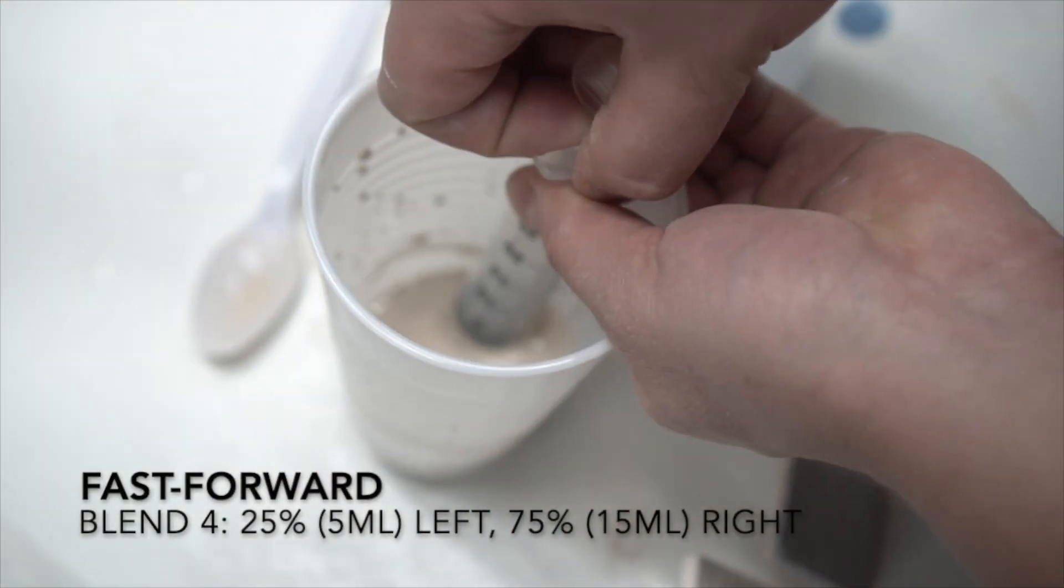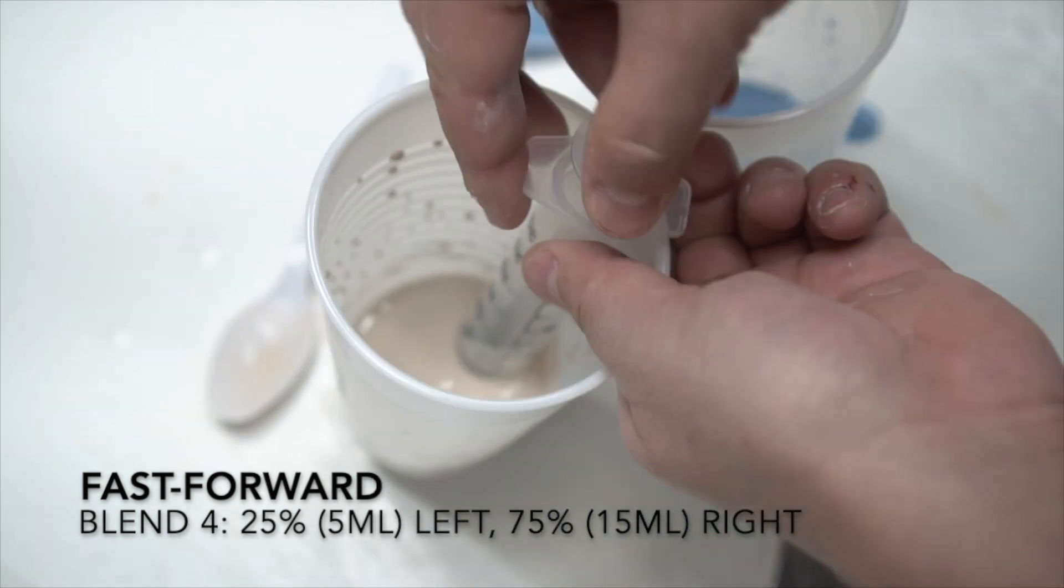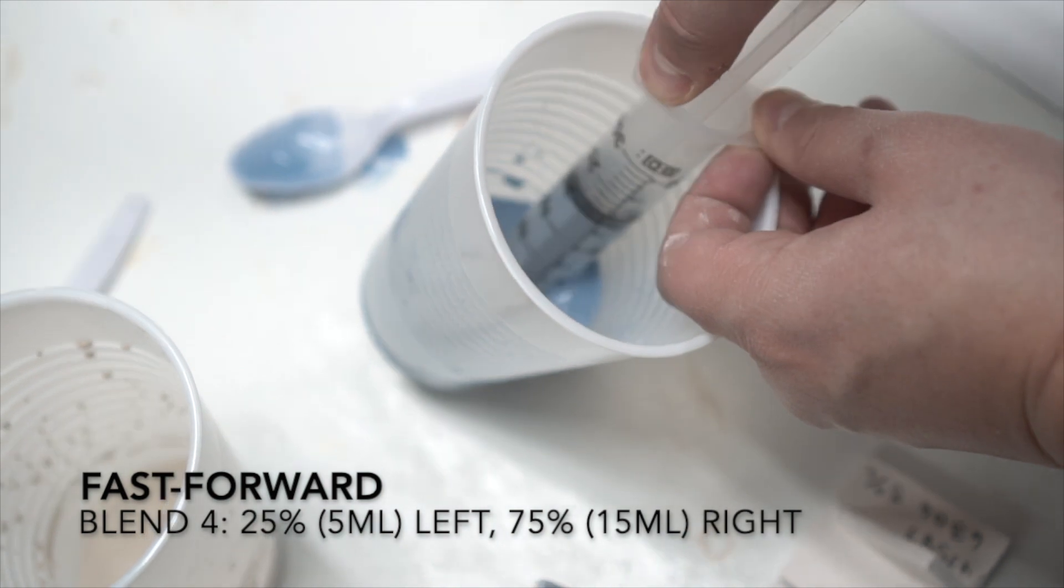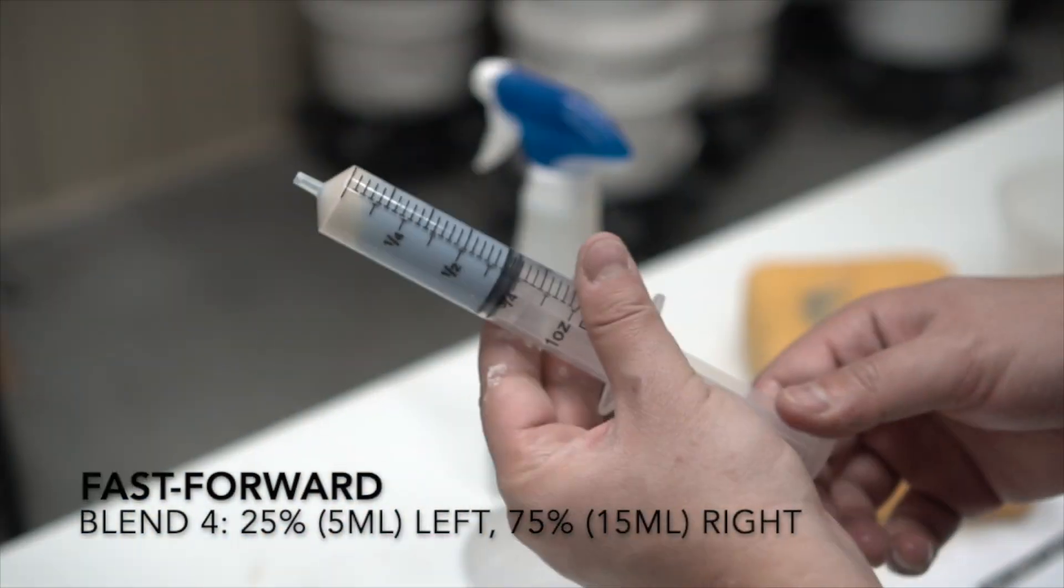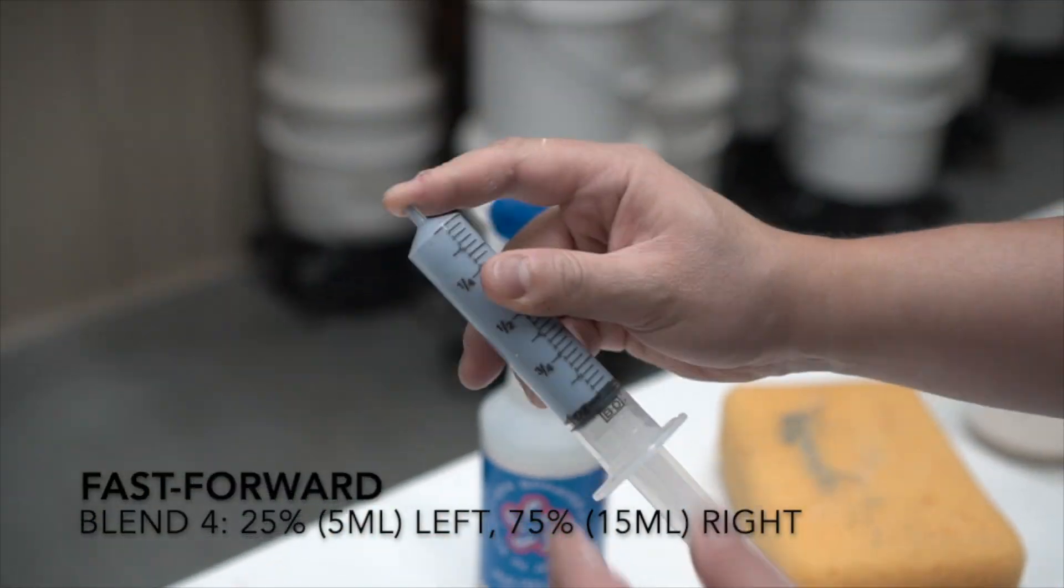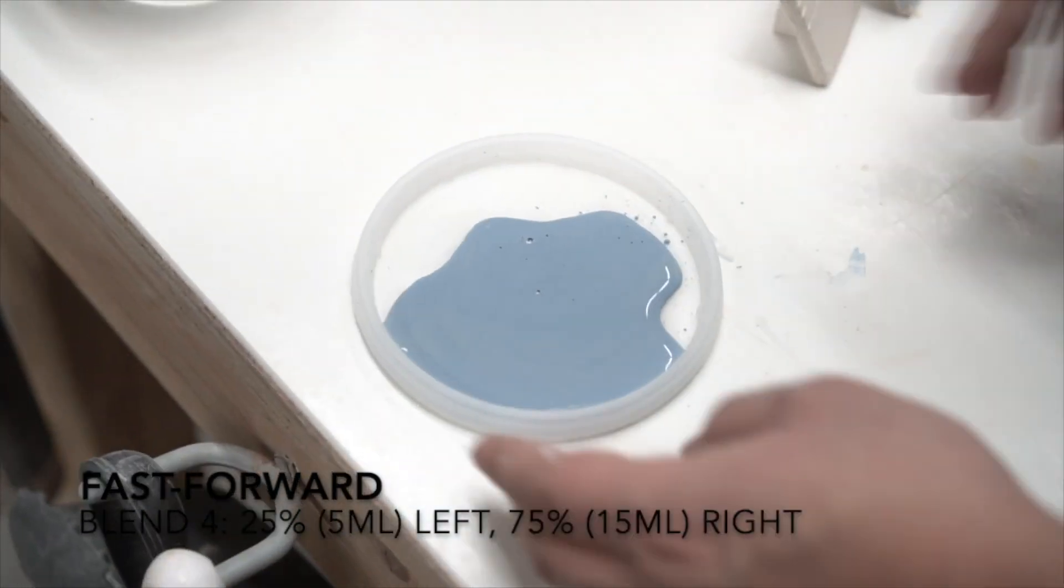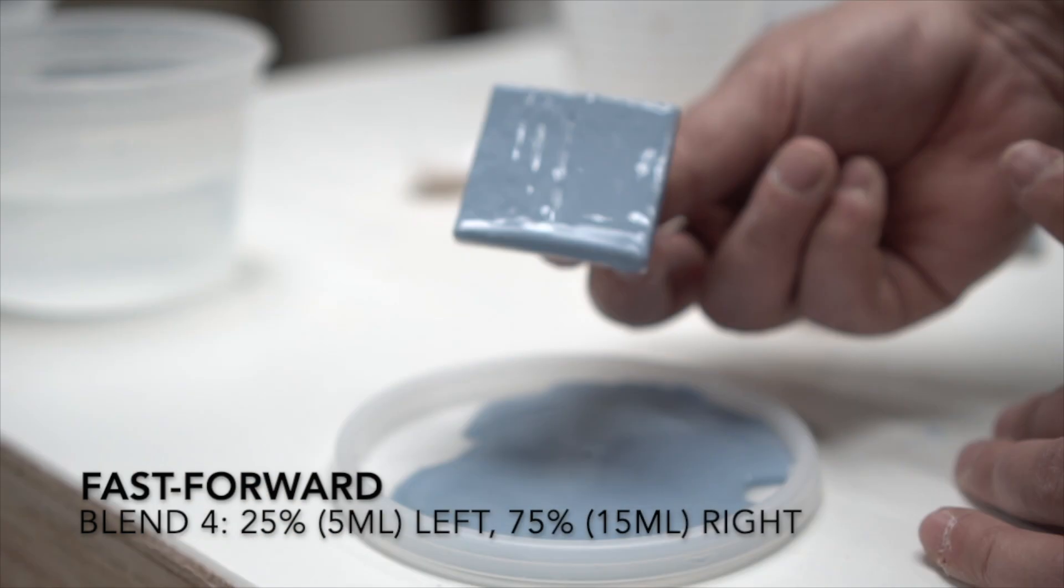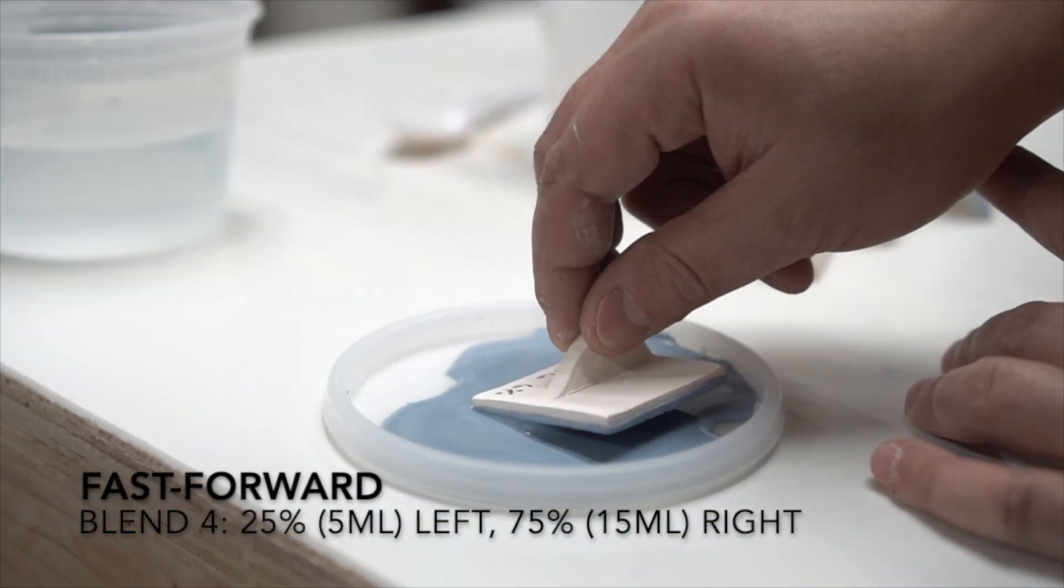The fourth test will require only 5 milliliters of the left glaze and 15 milliliters of the right glaze. Once again, the two glazes are mixed inside the syringe, dispersed into the container lid, the test tile is dipped, and the bottom of the test tile is cleaned off.